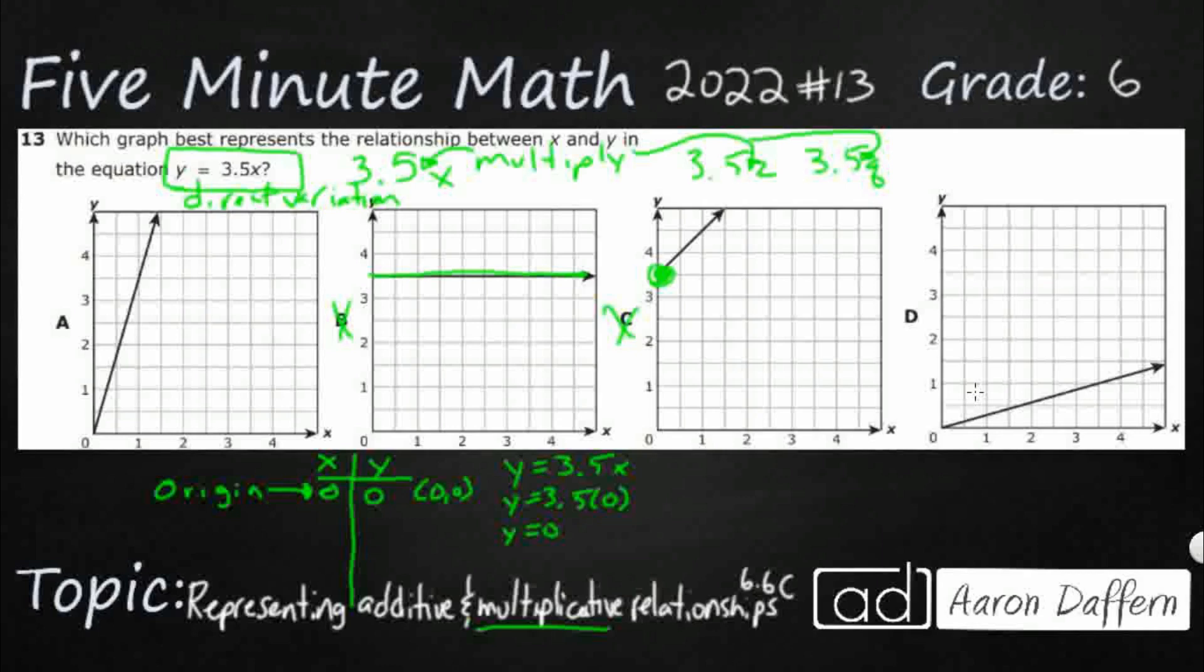So let's just choose x's and there's no need to make them super difficult. Let's just choose like one and two. If we need to go on, we can. So y equals 3.5x. So I'm going to make my x equal 1 now. That is going to be my independent variable.